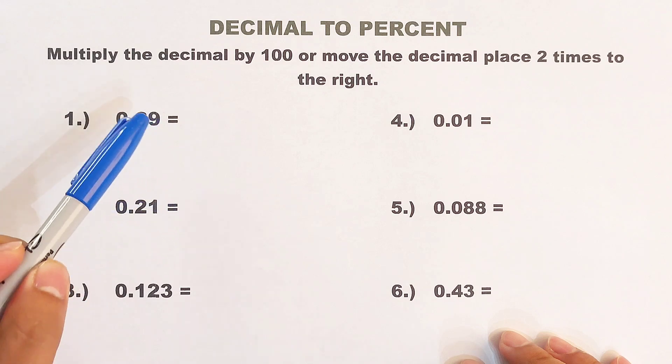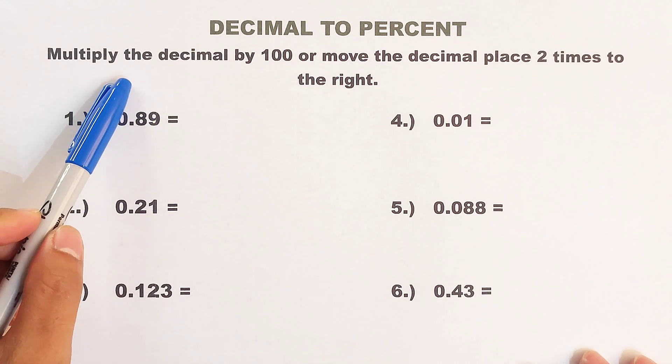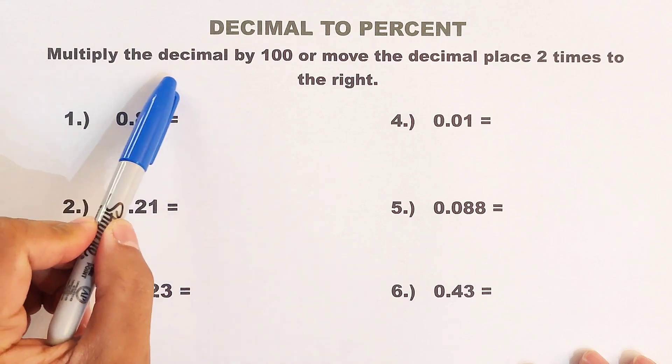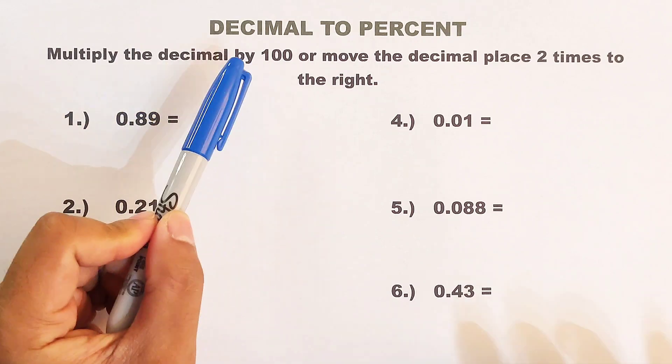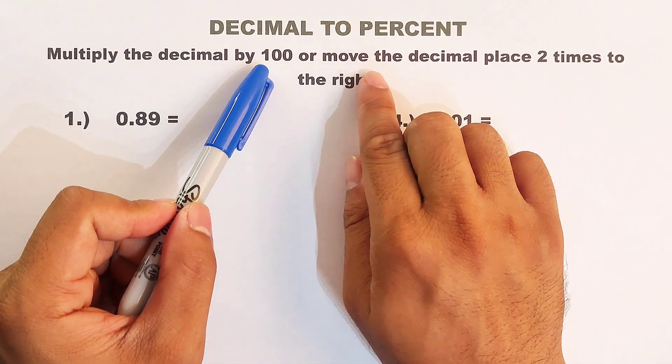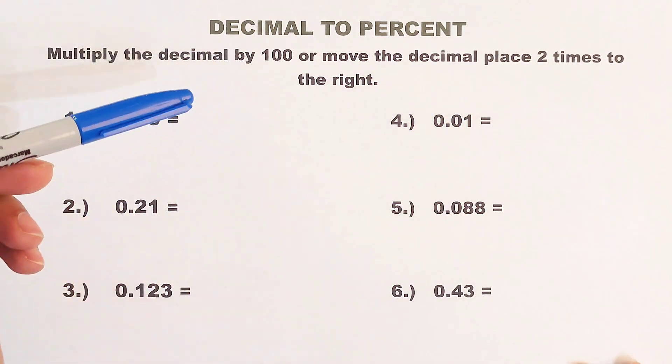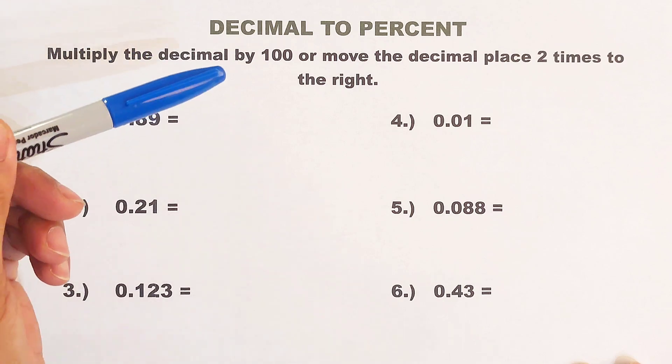I have here a simple reminder that in converting decimal to percent, what we need to do is to multiply the decimal by 100, or you can simply move the decimal places two times to the right. And for you to understand this note, let's have example number 1.